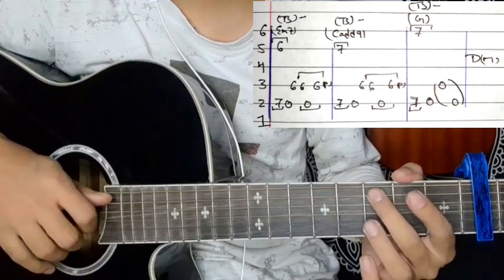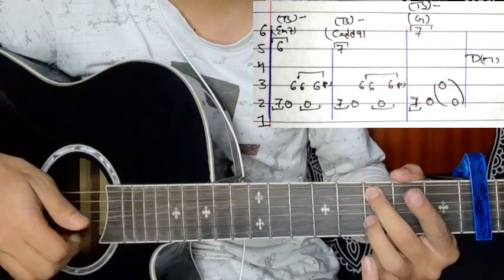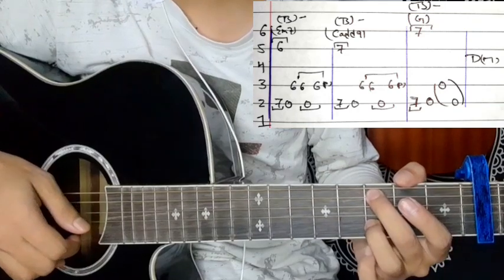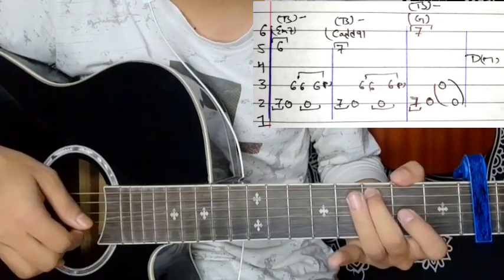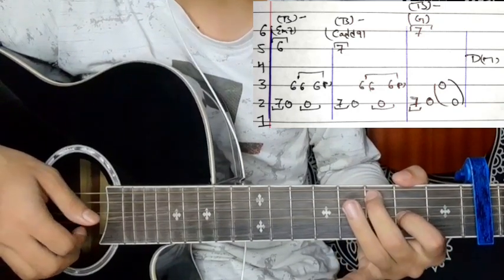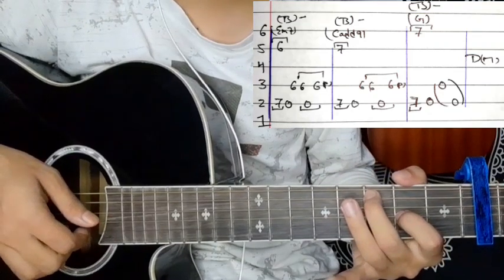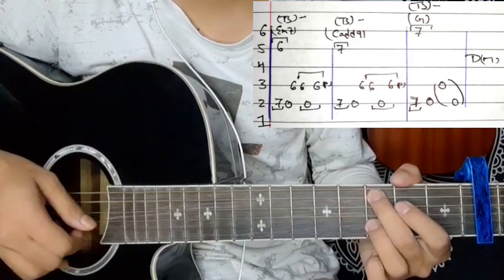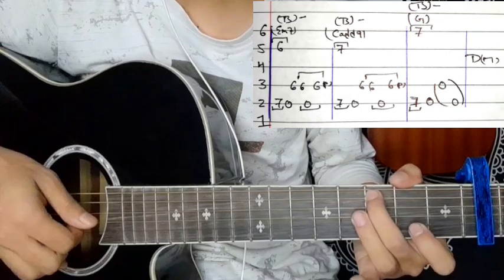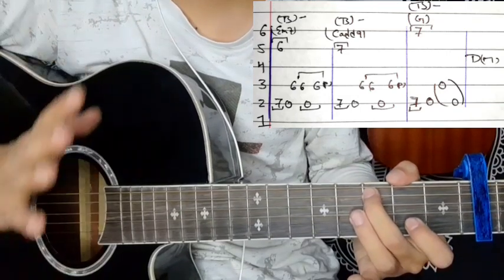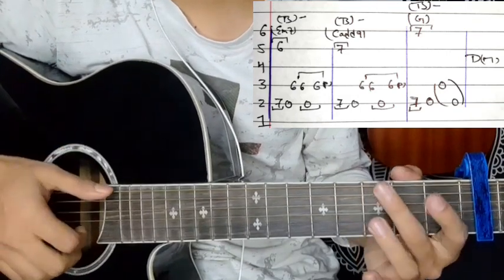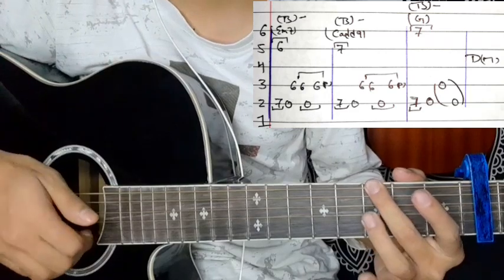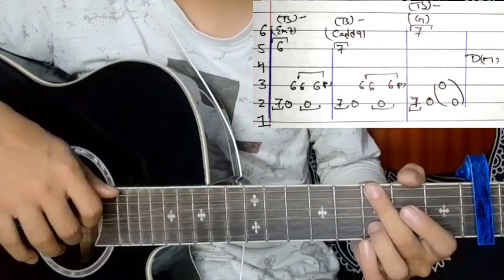After that, the 9-7 pattern on the sixth string 7, second string 7. Same picking - 5-2 pattern, second string open, third string 6, then 6 again, second string open, third string 6 pull-off. Same strings throughout - sixth string 7-7-7, fifth string same 5-6-2-2, second string open.